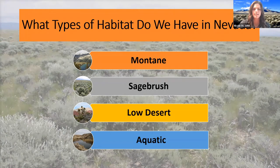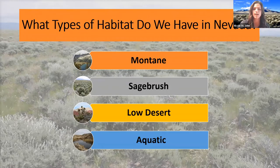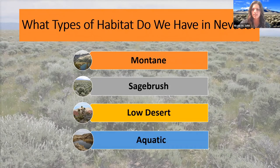Our next habitat type is the low desert, characterized by sparse vegetation. It's much drier, much hotter, with less available water on the landscape, and this is typically our lowest elevation habitat, ranging from below the sagebrush habitat all the way down to about below sea level. A good example of the low desert habitat is Las Vegas — as you get farther south into our state, you start transitioning into the Mojave Desert.